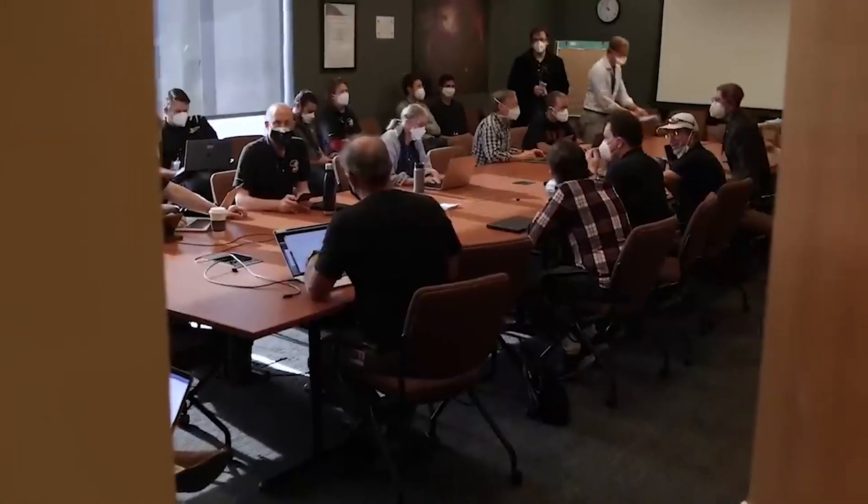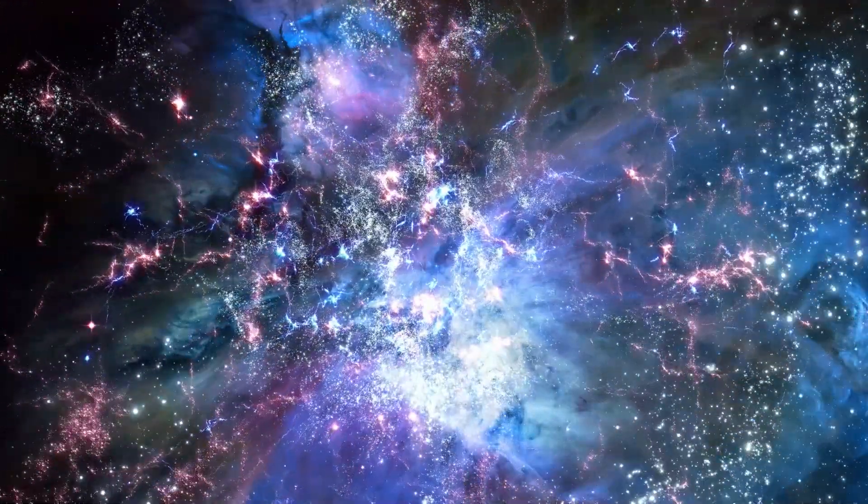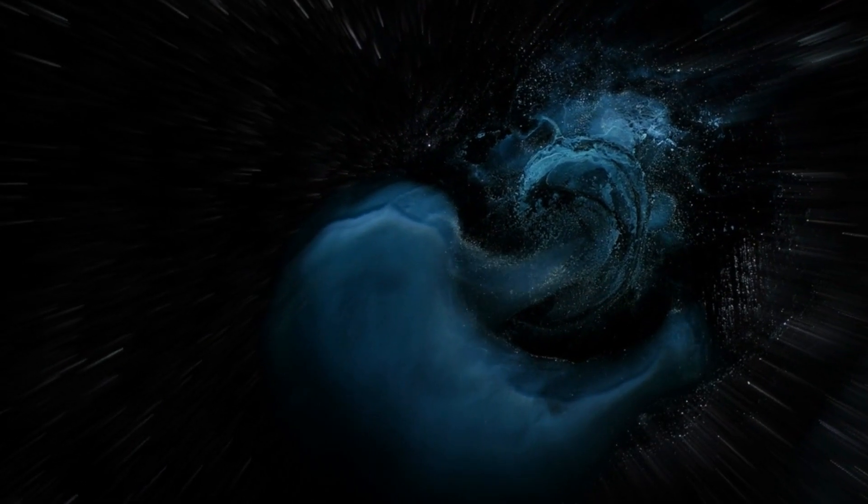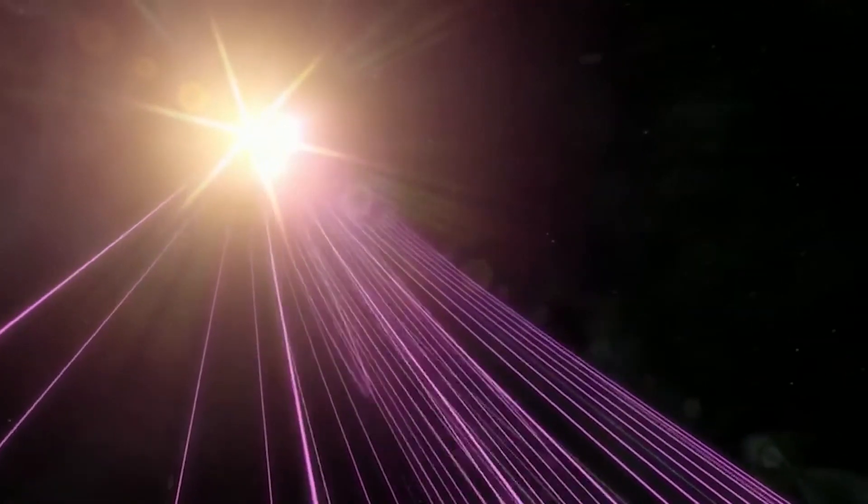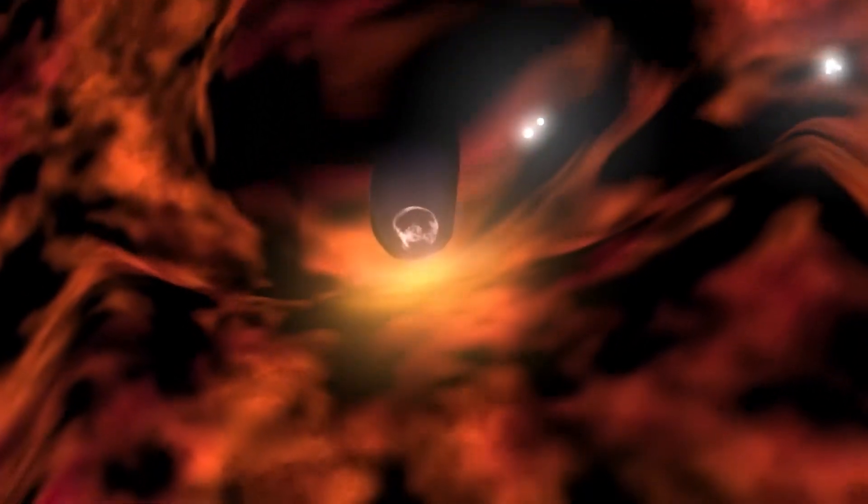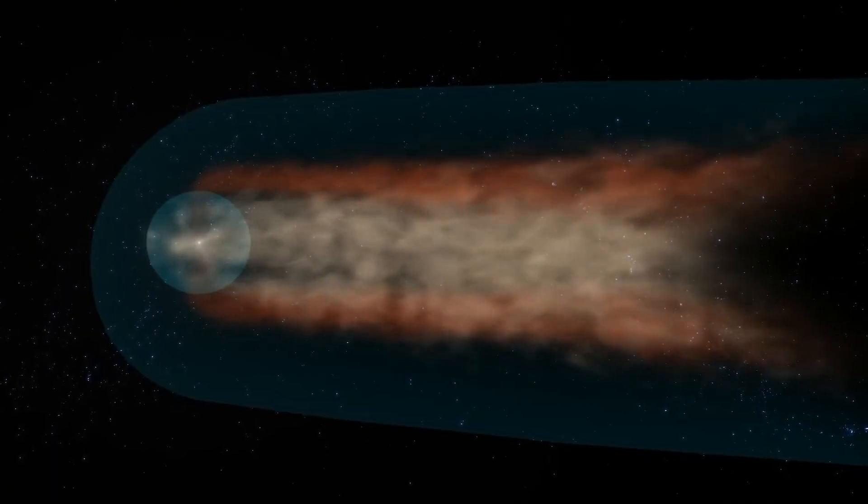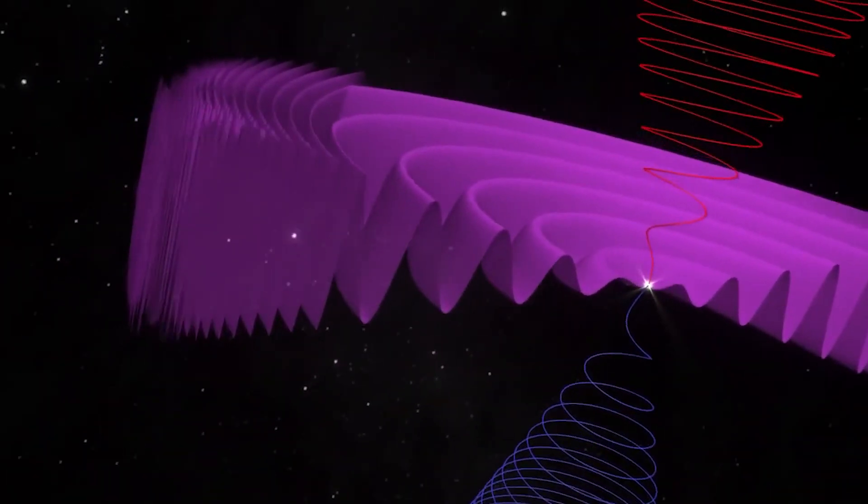One possibility that has been suggested is that the force could be related to the interstellar magnetic field, which is likely to be aligned in a different direction than the magnetic field of our own solar system. This could create a kind of barrier or turbulence at the boundary between our solar system and interstellar space, which could, in turn, create the observed changes in plasma density and magnetic field strength.